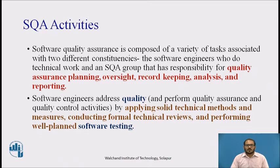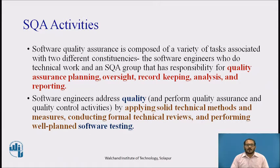Software quality assurance is composed of a variety of tasks associated with two different constituencies: the software engineers who do the technical work, and the software quality assurance group that has responsibility for QA planning, oversight, record keeping, analysis, and reporting. Software engineers address quality and perform quality assurance and quality control activities by applying solid technical methods and measures.